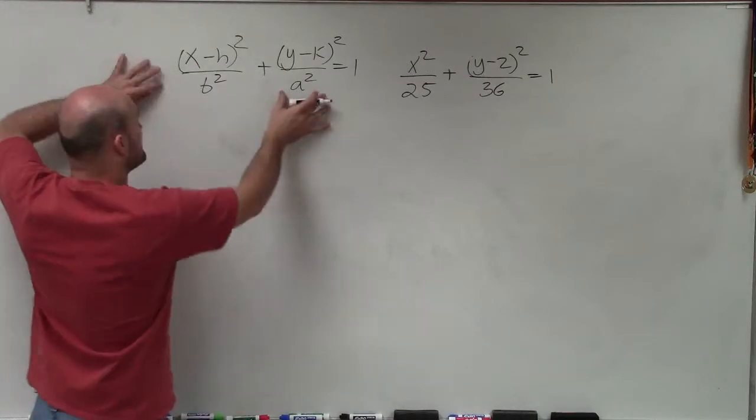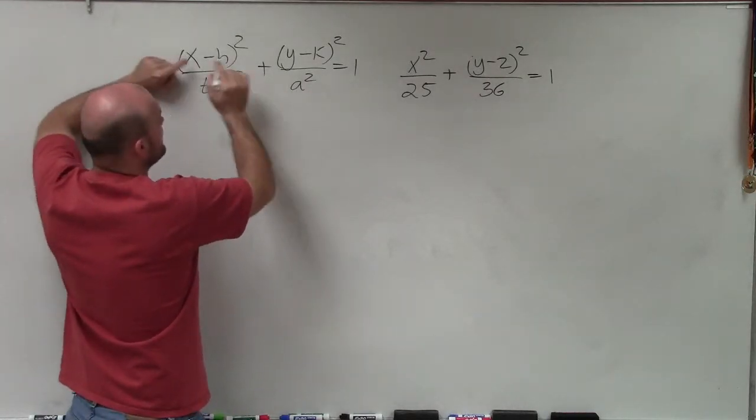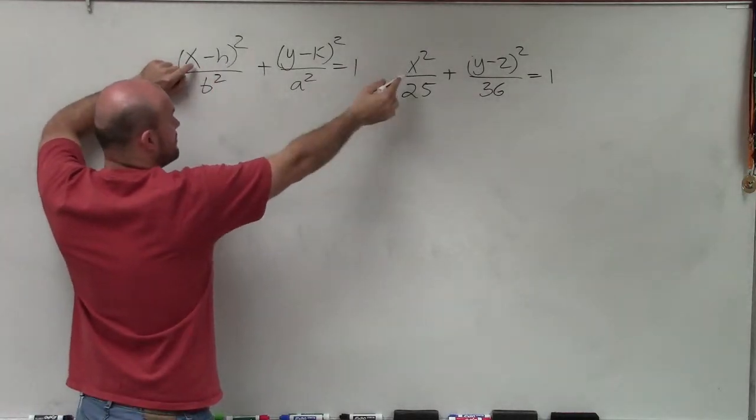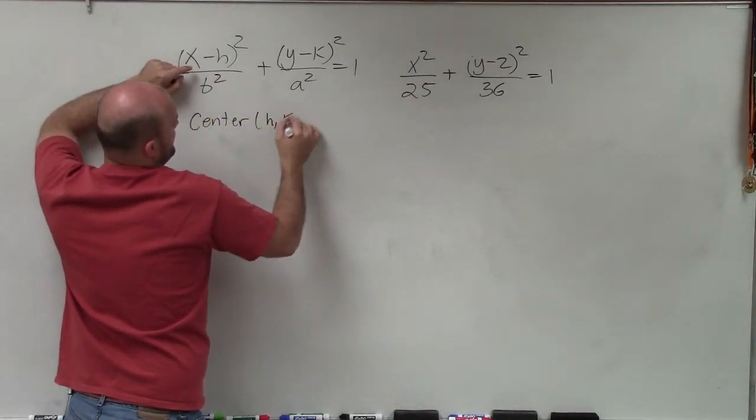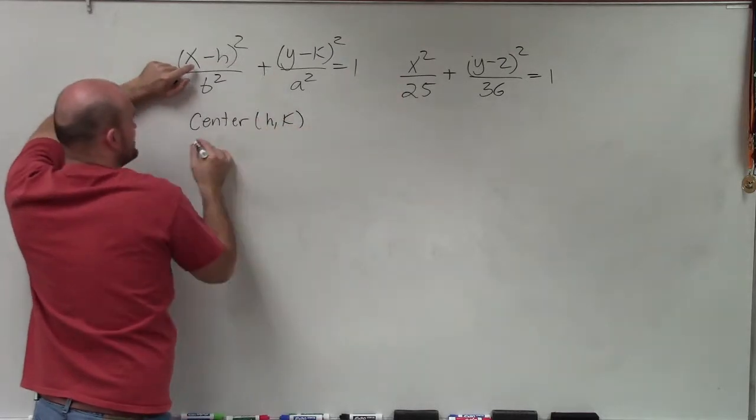But what's important about now that I know this formula, I can just say, OK, x minus what is x squared? Well, that's just going to be 0. So the center is h comma k. Well, since h is 0,